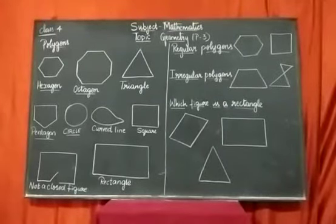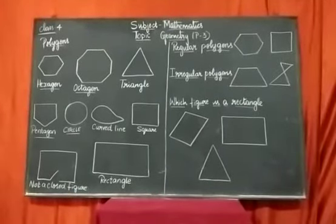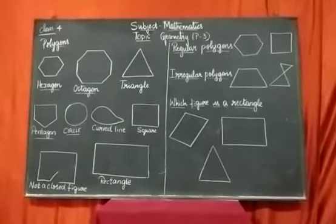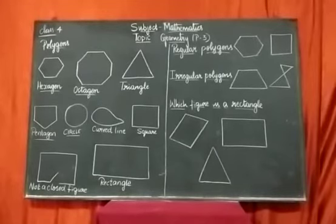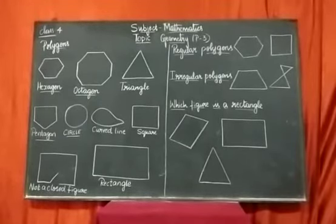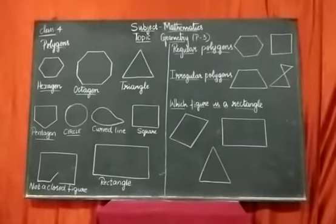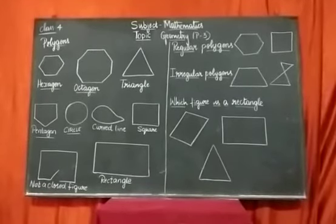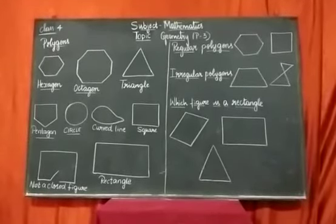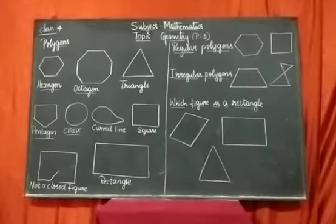Assalamualaikum warahmatullahi wabarakatuhu. Welcome back to my class students. Class for subject mathematics. So we were taking geometry. In our last class, we have learnt about angles — different types of angles: right angle, acute angle and obtuse angle.